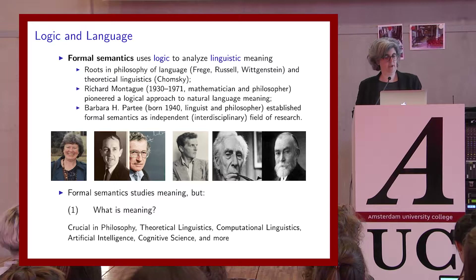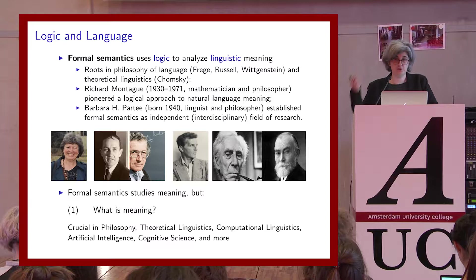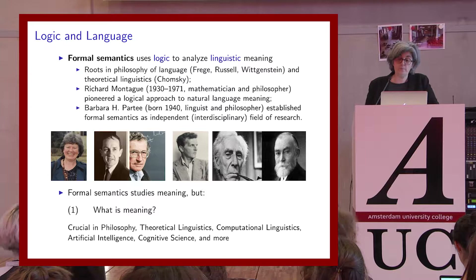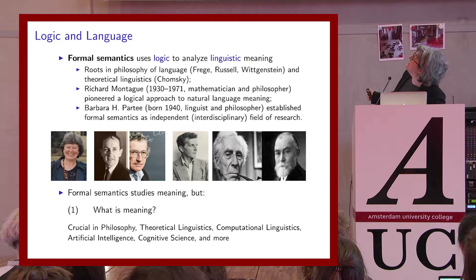Formal semantics uses logic to analyse meanings from natural language — languages like English, Dutch, Mandarin and others. It has its roots in the philosophy of language, in the work of people like Frege, Russell and Wittgenstein. But also in theoretical linguistics, in particular in the generative tradition, the tradition of generative grammar championed by Noam Chomsky.